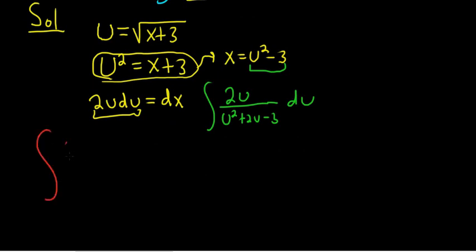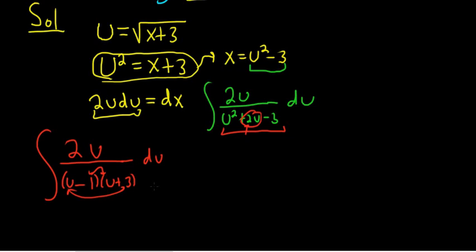So this is going to be 2u over, and let's see if this factors. I hope it does. So this is u, parentheses u, parentheses du. And let's see. To multiply to 3, we're going to need 1 and 3. And the middle term has to be positive 2u. So I think it's going to be plus 3 minus 1. Yeah, that looks okay. Because negative u plus 3, the outer term is 3u. The inner term is negative u. When you add them, you get 2u. Yeah, it looks all right.